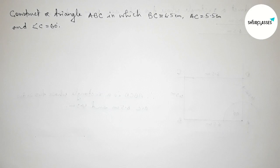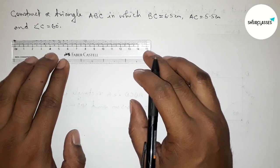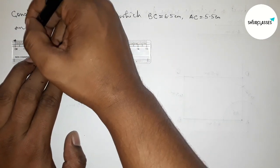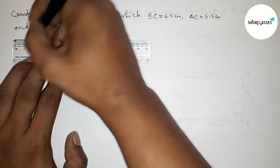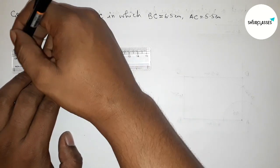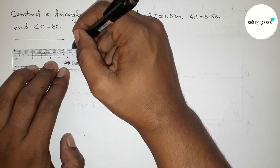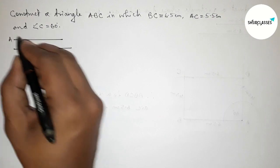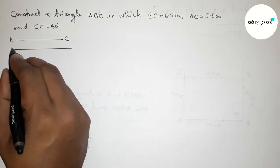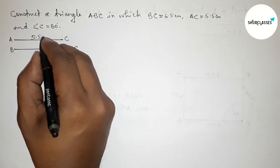Let's start the video. First of all, let us draw the given two sides. Drawing 5.5 centimeters — this is AC, 5.5 centimeters — and drawing 6.5 centimeters — this is BC, 6.5 centimeters.